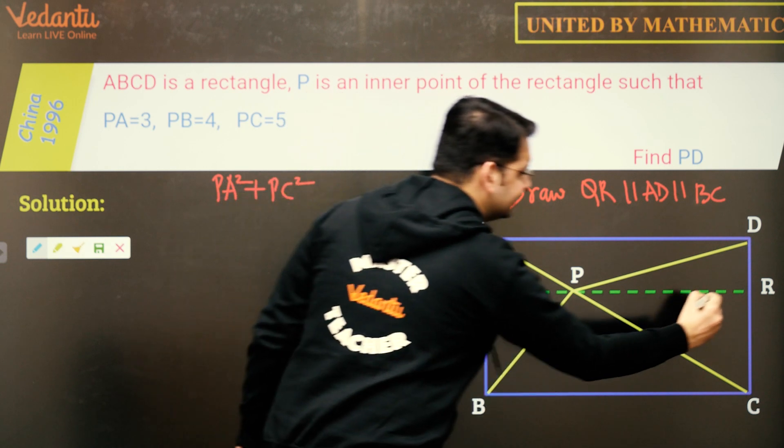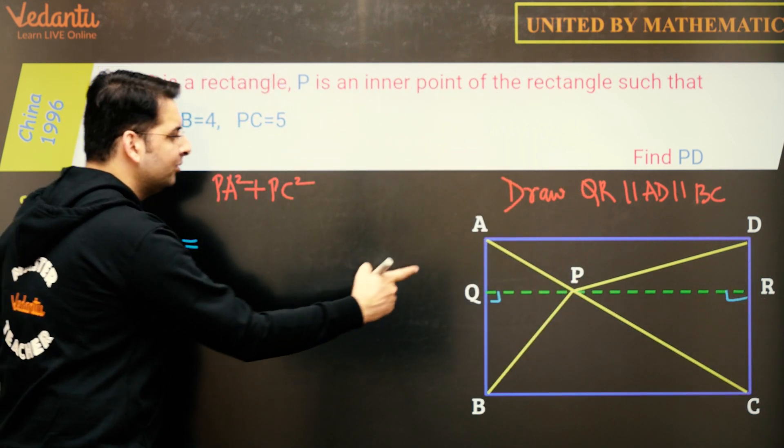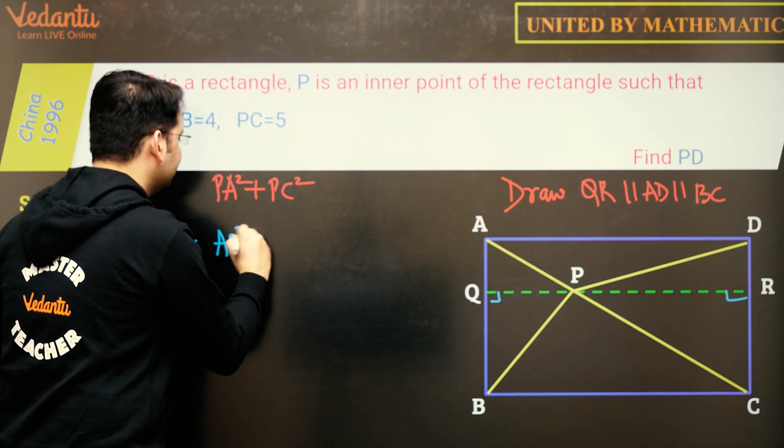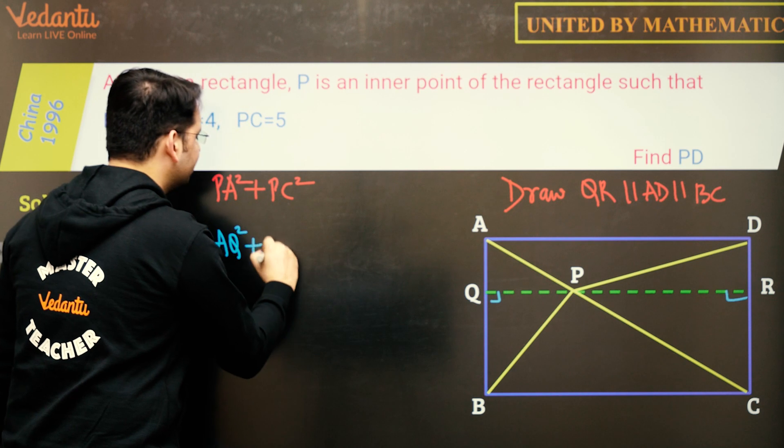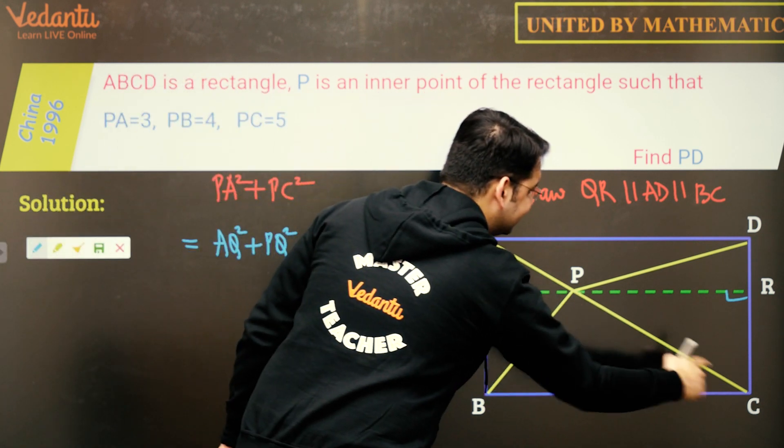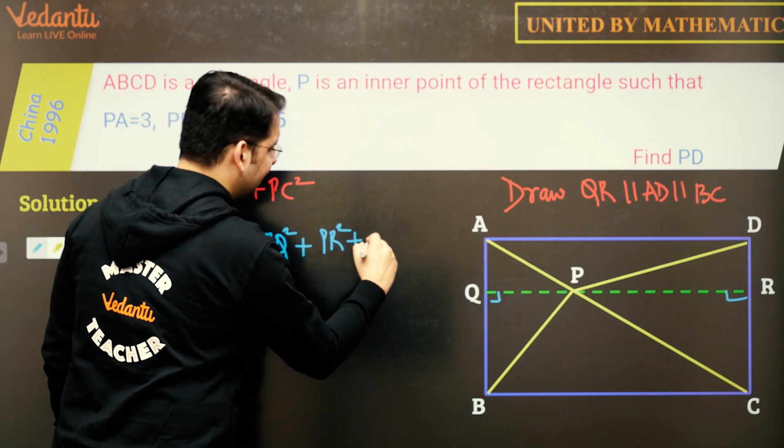And let us apply Pythagoras because we know that since the line is parallel to both of these sides, this would be 90 degrees, this would also be 90 degrees. So PA square would be equal to AQ square plus PQ square, likewise PC square will be equal to PR square plus RC square.